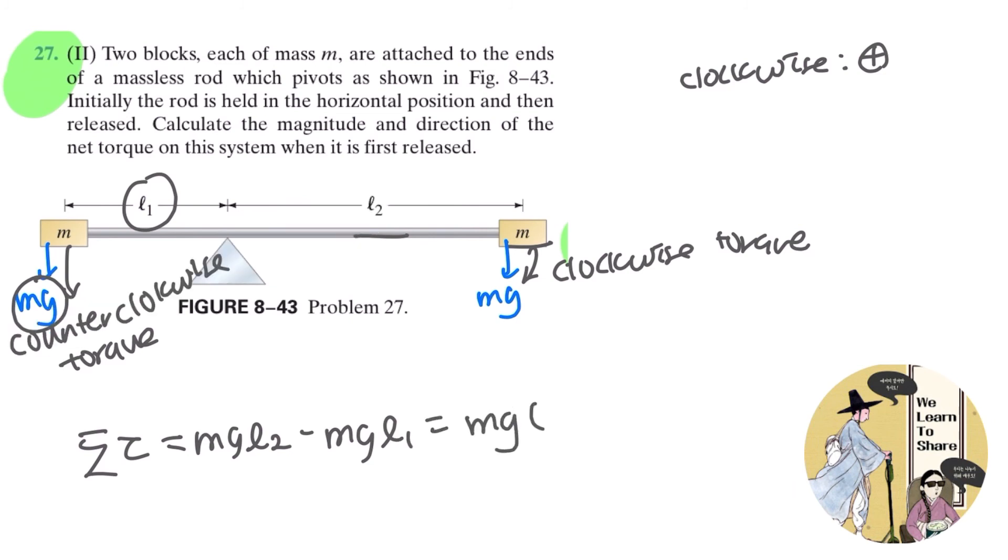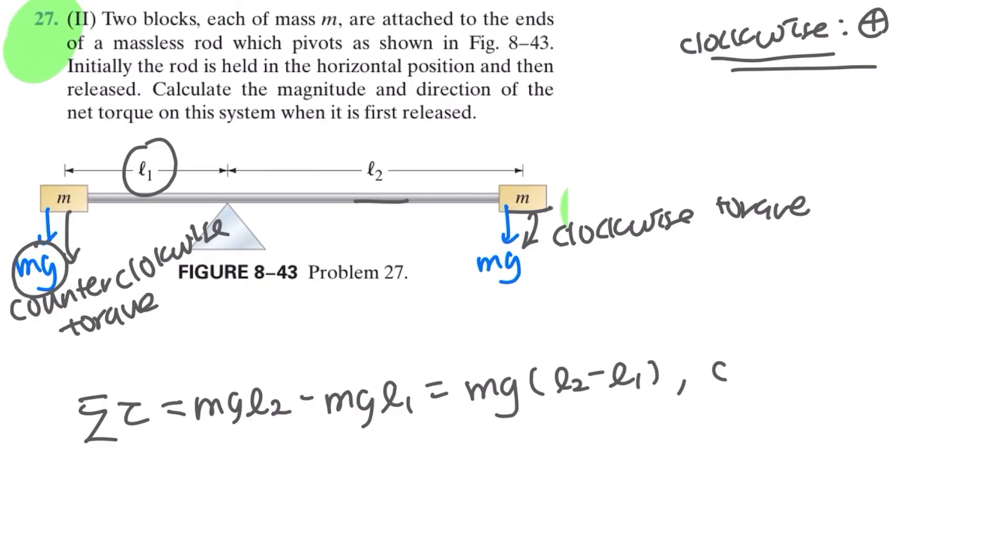And this could be simplified as mg in parenthesis, L2 minus L1. The direction of the net torque would be clockwise.